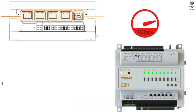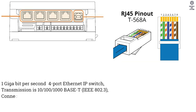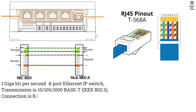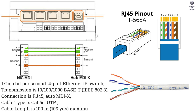Ethernet Interface: 1 Gigabit per second 4-port Ethernet IP switch. Transmission is 10/100/1000 Base-T, connection is RJ45, Auto MDIX. Cable type is Cat 5e UTP. Cable length is 100 meters (109 yards) maximum.